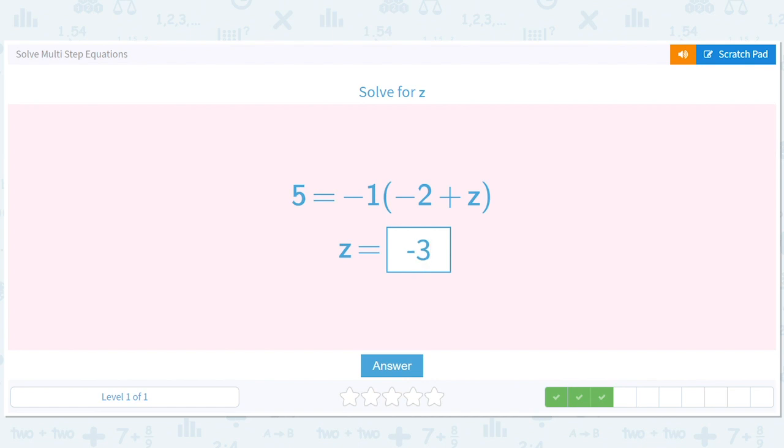You can always check your work, too, right? If I put in a negative 3 here for z, I'll get negative 2 minus 3 is negative 5. And then negative 5 times negative 1 is positive 5. So it makes the equation work.